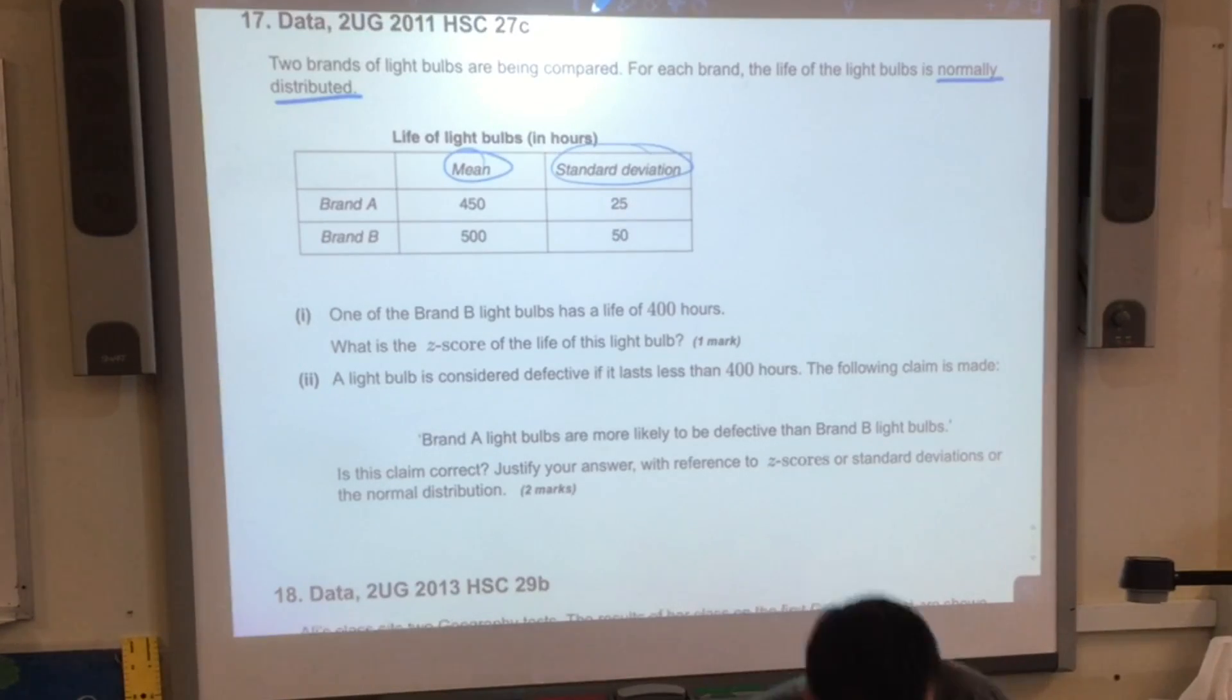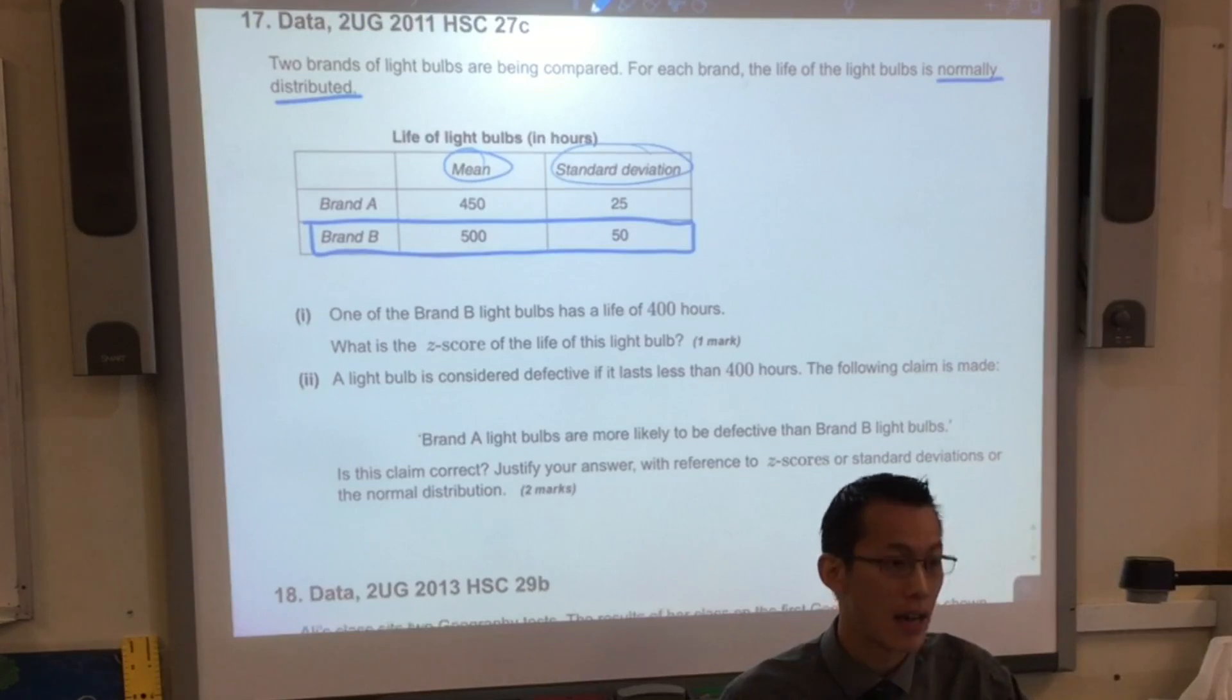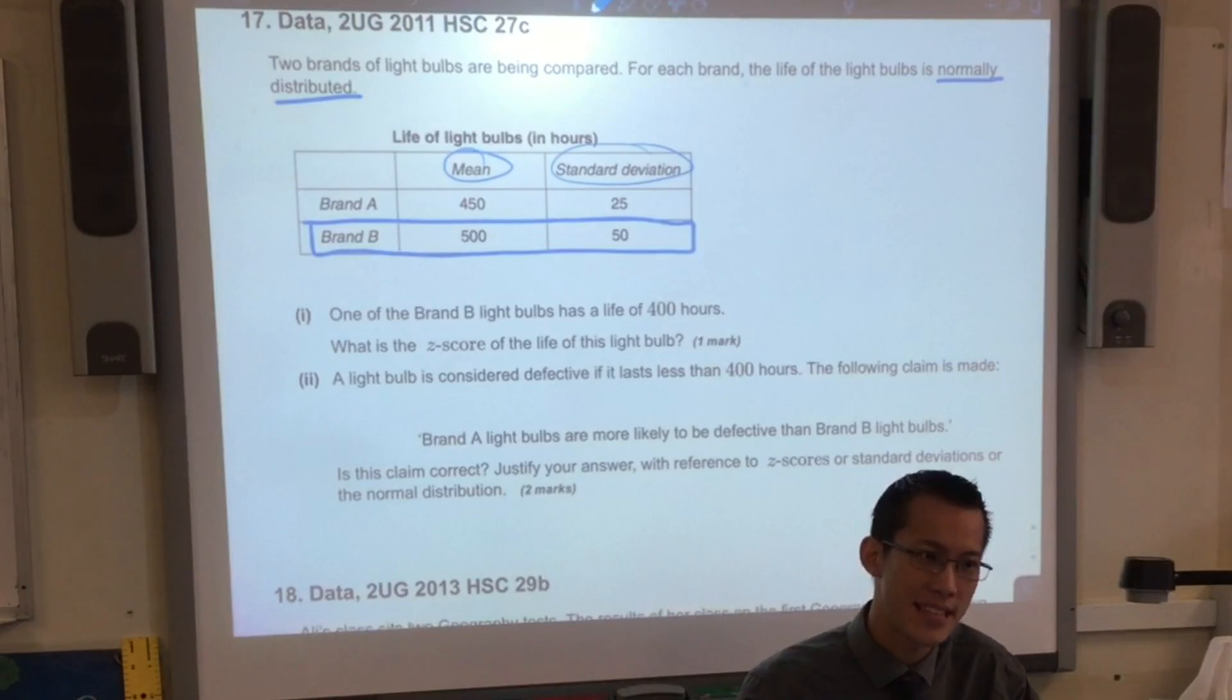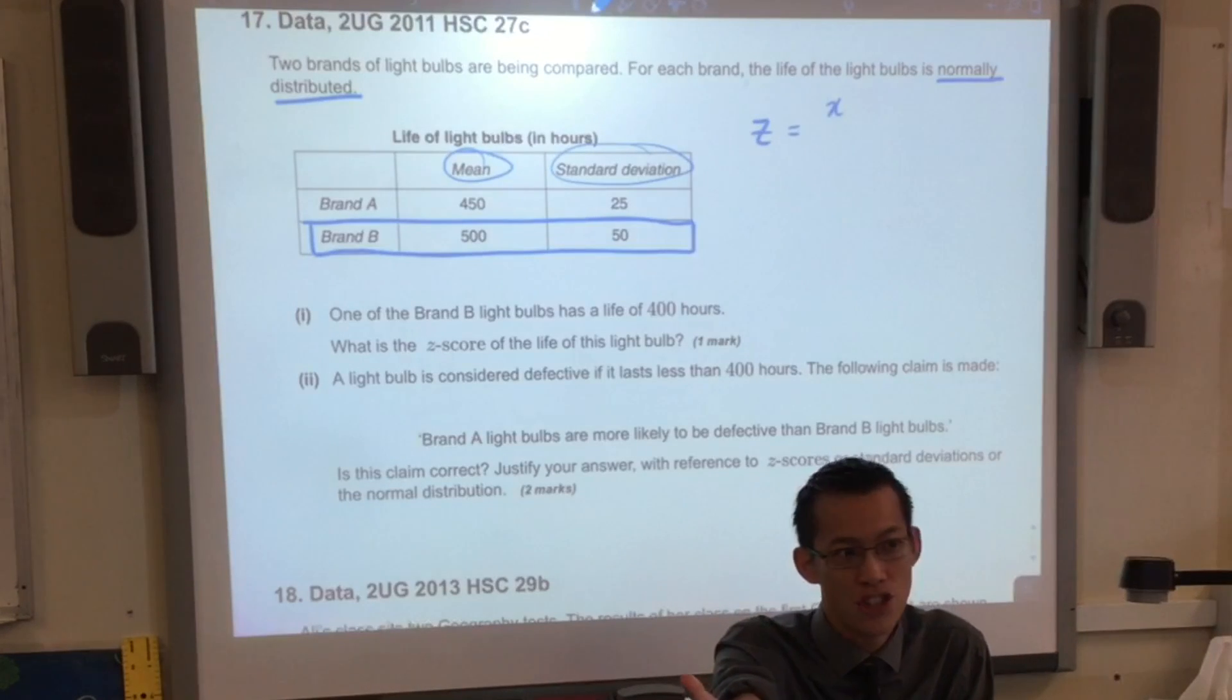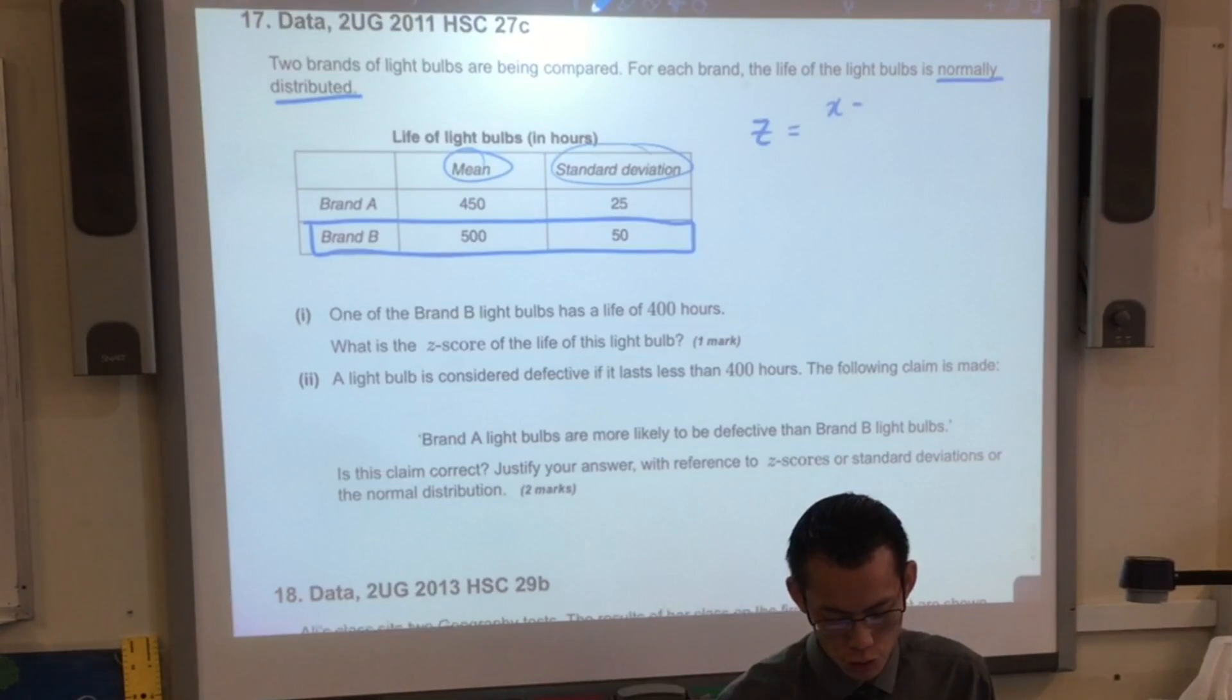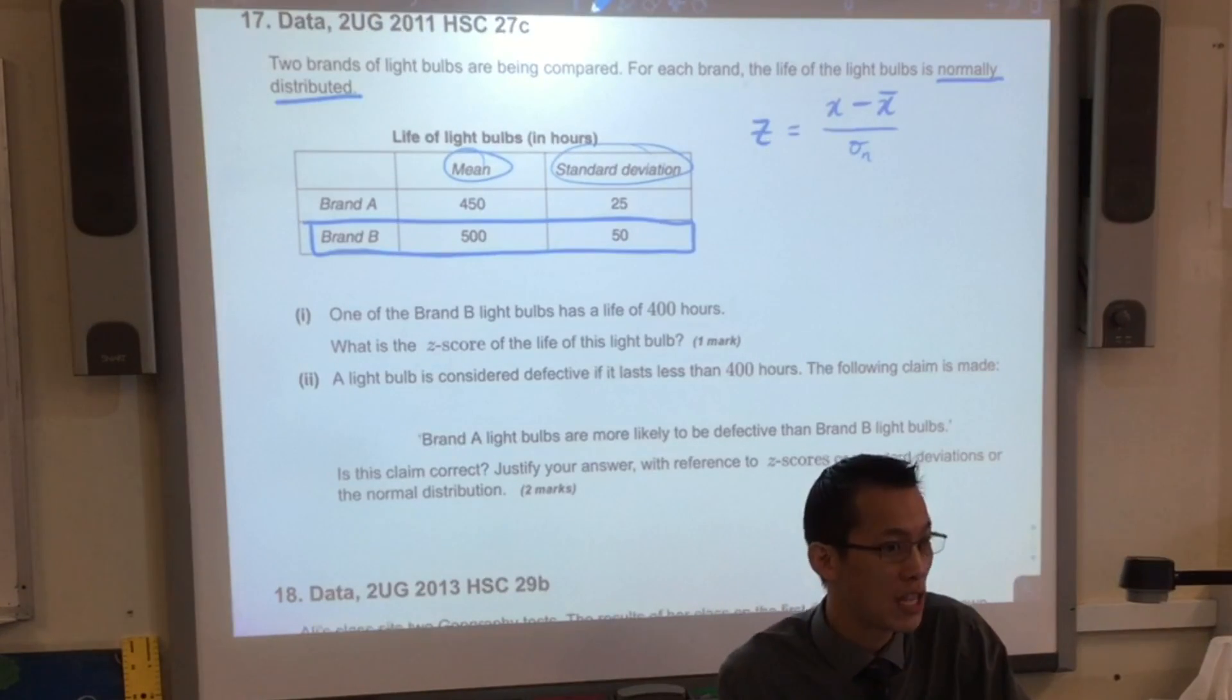They're just asking us first, they give us the hypothetical that if you got one of these light bulbs, brand B, and it happened to last for exactly 400 hours, what would be the Z-score for that particular bulb? I know you usually have the formula for the data sheet there, however, the formula for Z-score is pretty simple. Does anyone remember what Z is equal to? It's the score of your particular thing, which in this case is 400. You subtract the mean, and then you divide by the standard deviation.